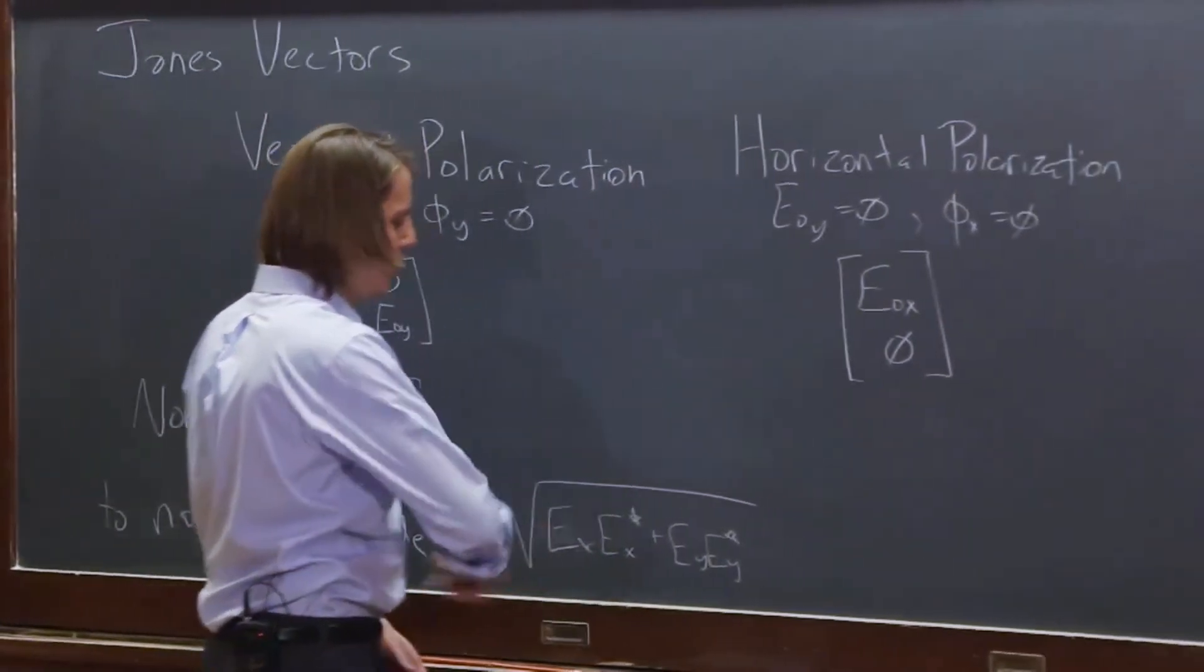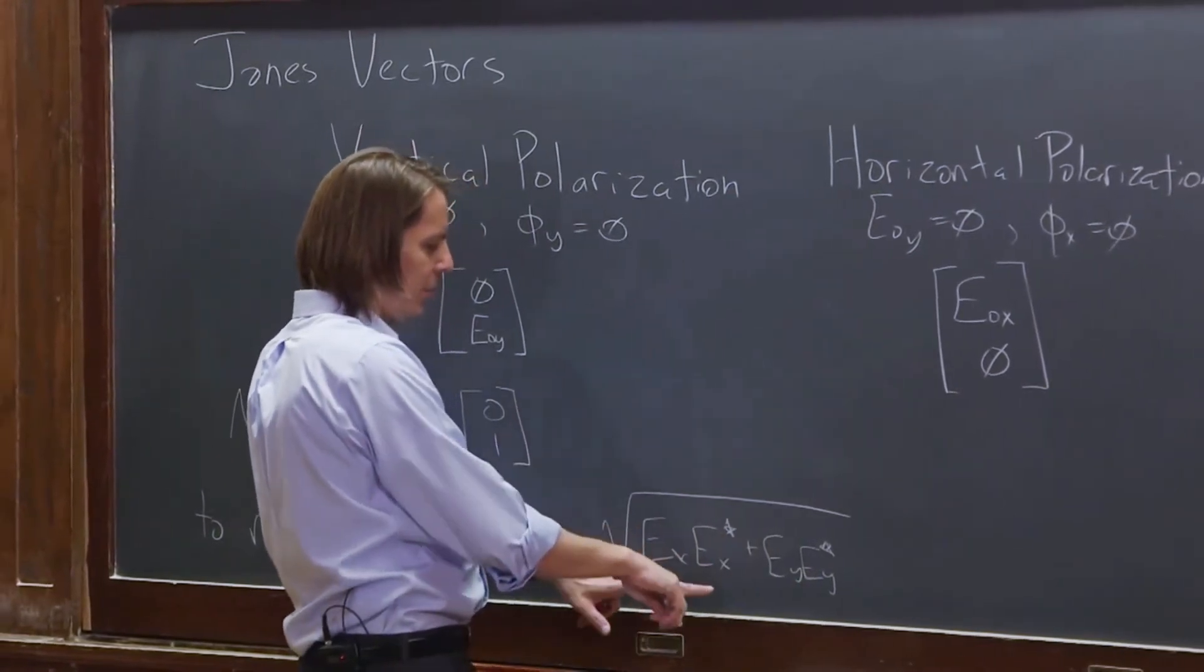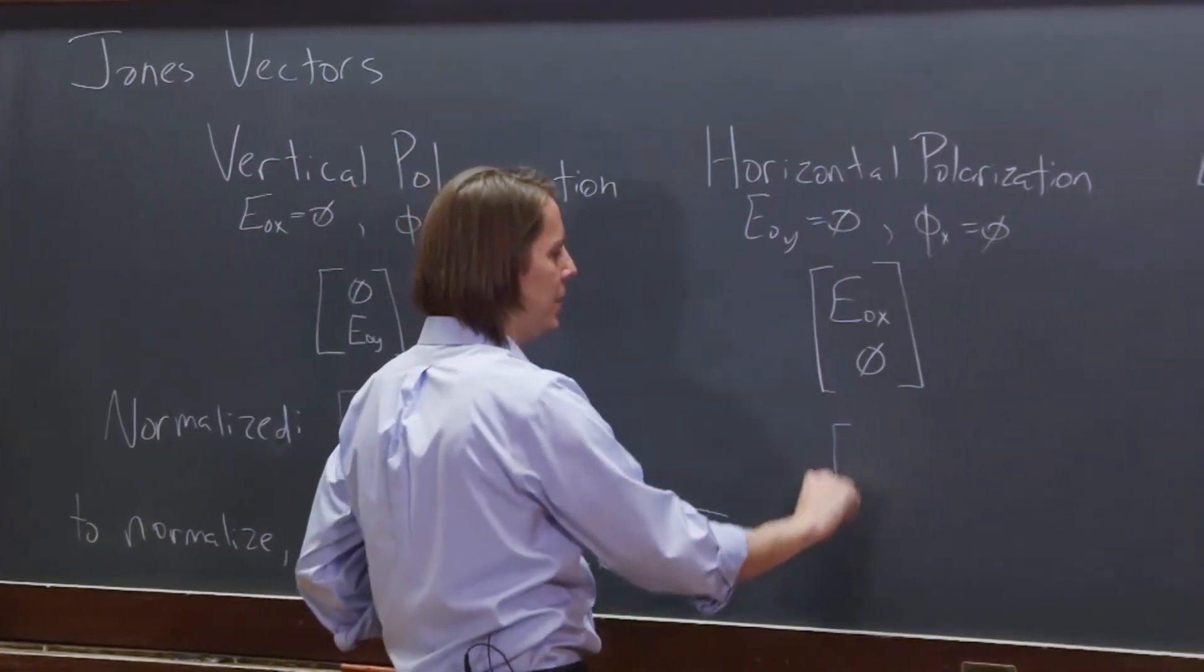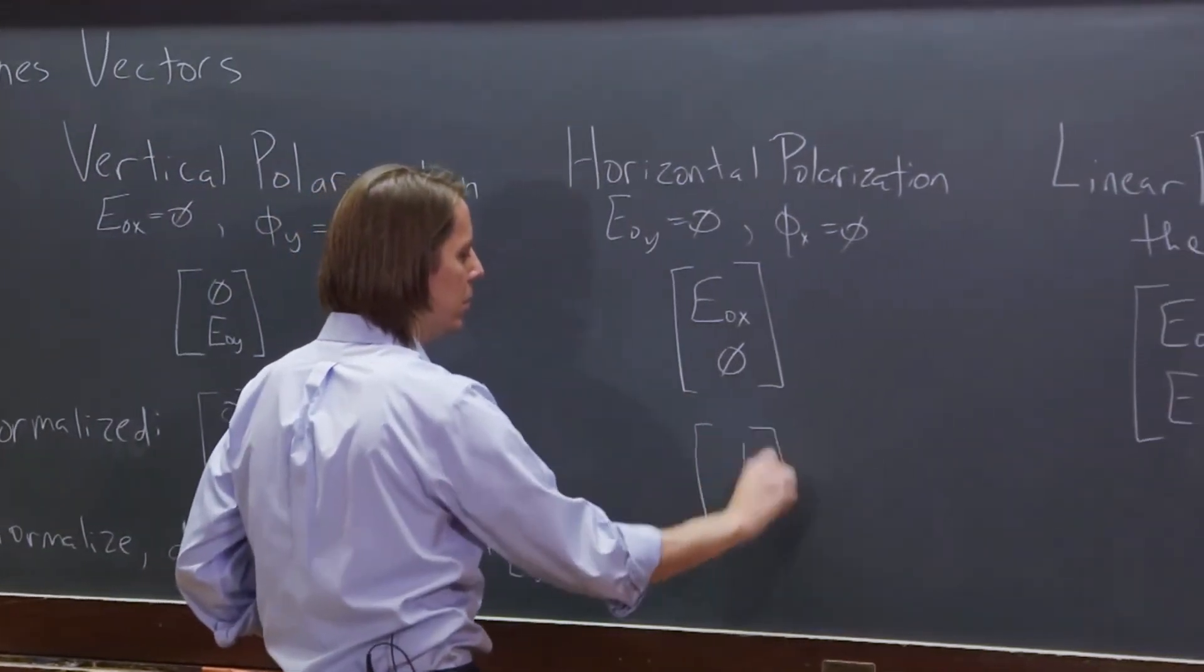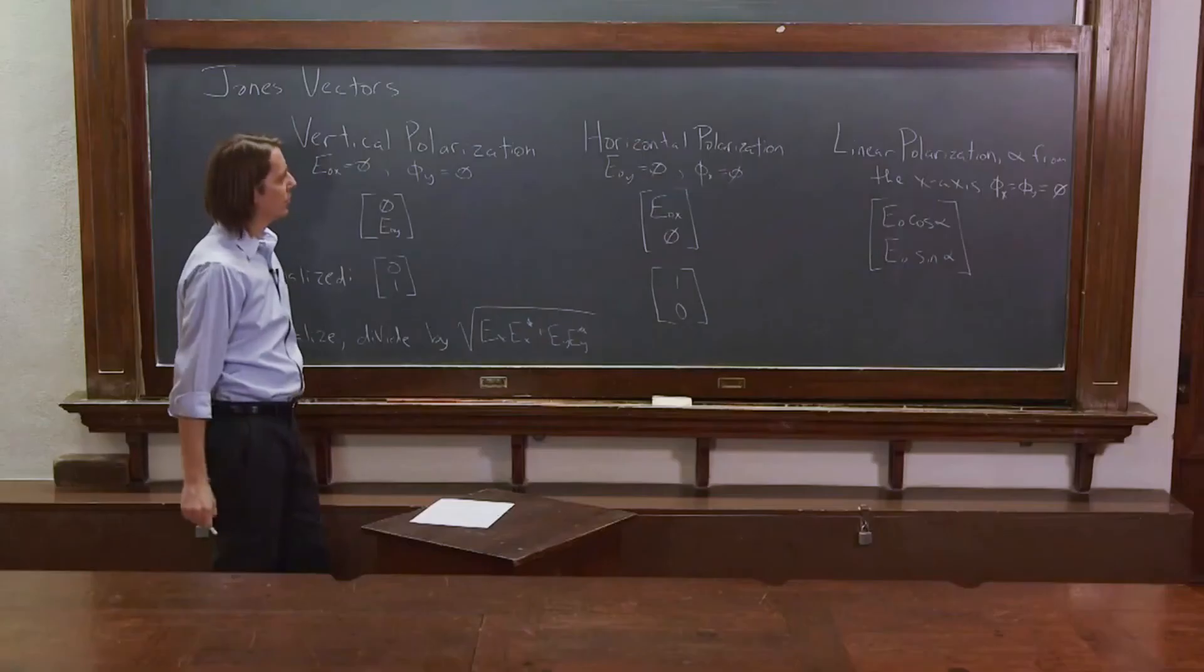Same argument here. If we were to normalize it, we'd find that the amplitude is zero zero, and then it's real. So it's the square root of E not x squared. It's just E not x divided by E not x, and we get one zero. So that's the normalized version of the horizontal polarization.